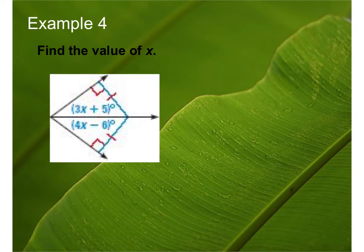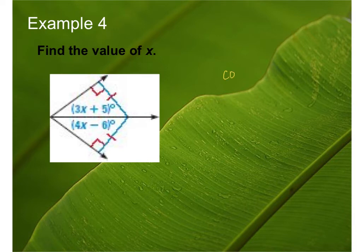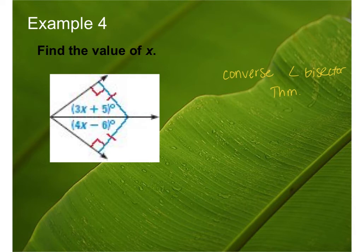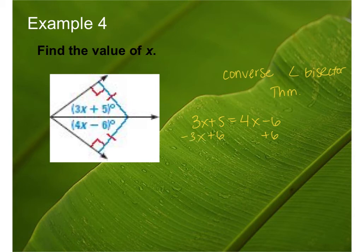Next example: what are we using? The converse — because it doesn't tell us the angle measures; it tells us those two line segments are congruent. So we're using that to determine it's the angle bisector: converse angle bisector theorem. When the angles aren't known to be congruent, you use the converse to say these angles must be congruent. Solving the equation: add six to both sides and subtract three x — you get 11 equals x.